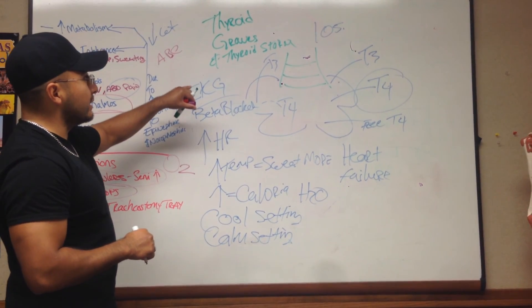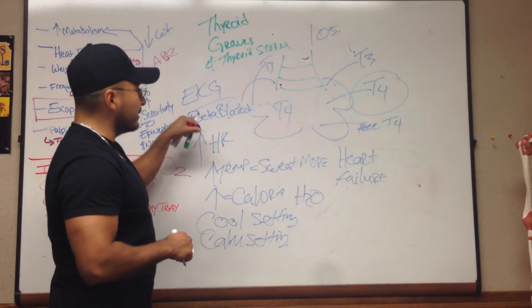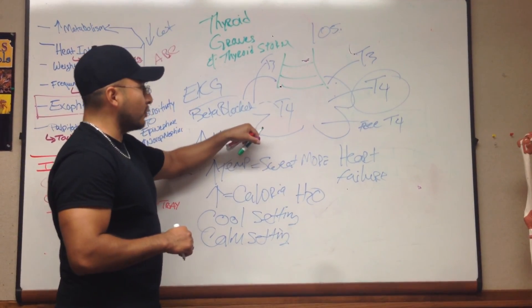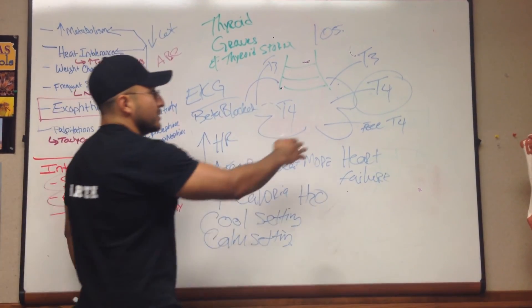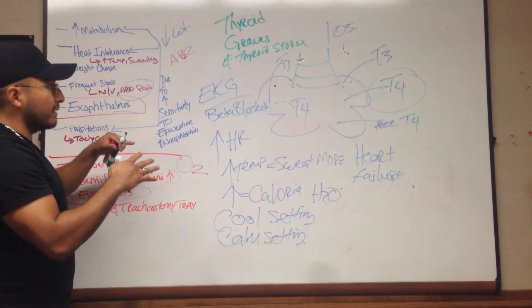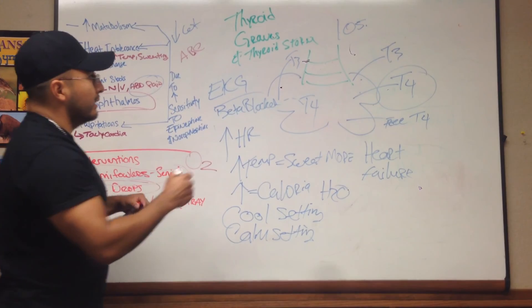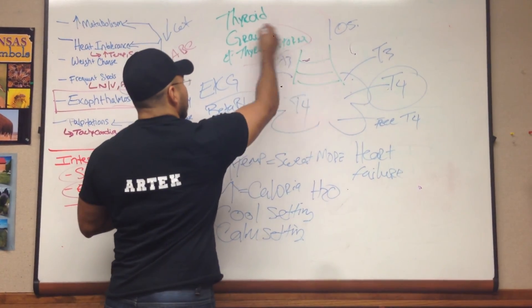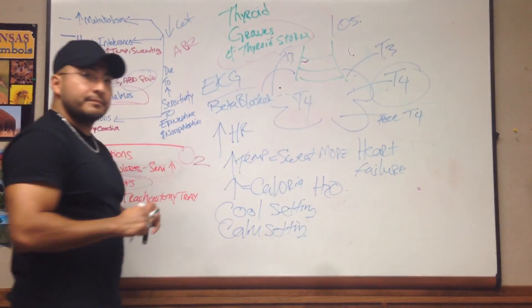We already talked about Graves disease. Graves disease is again an autoimmune disorder affecting the thyroid gland. When this excess T3 and T4 occurs, it affects the entire body. And that effect, the entire effect of the body, that is what's actually called a thyroid storm.